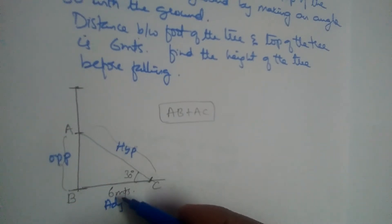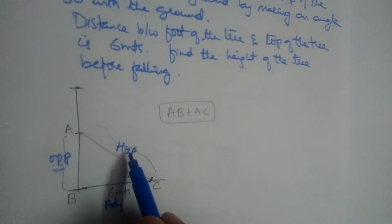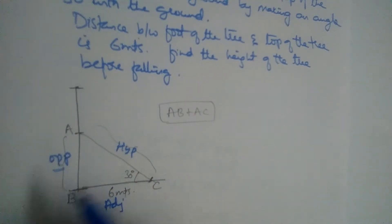So one side is given, one angle is given. We need to find two sides now. Let us find opposite first. We can find hypotenuse also. It is a personal choice. We will first find opposite in this case.